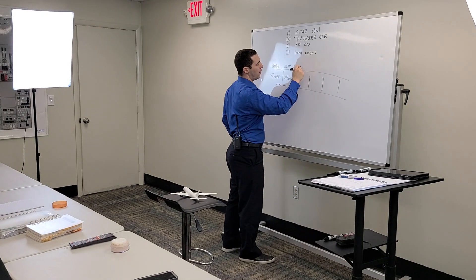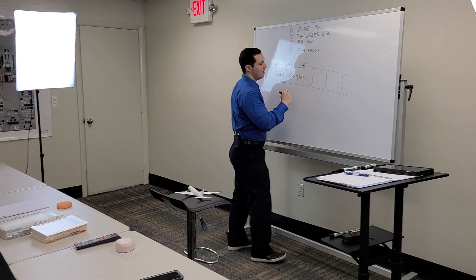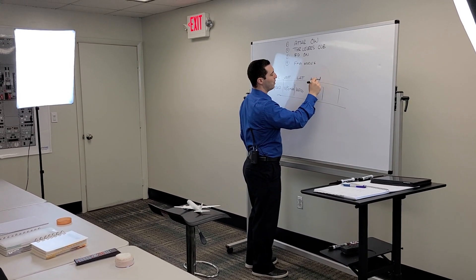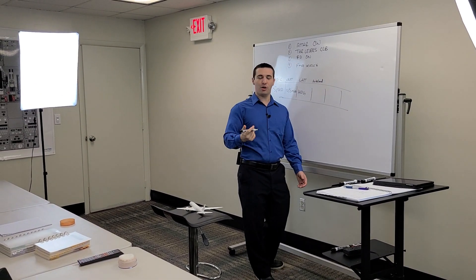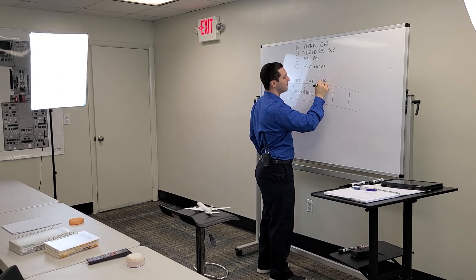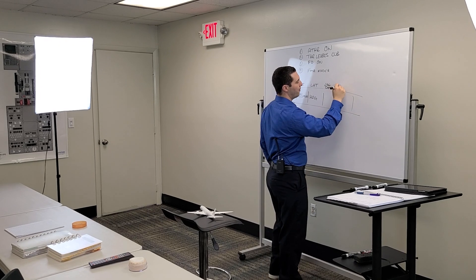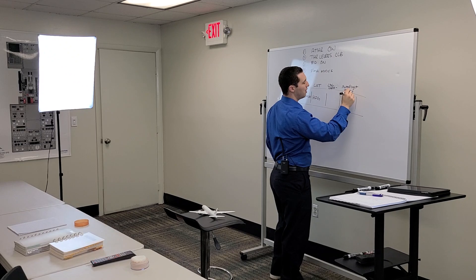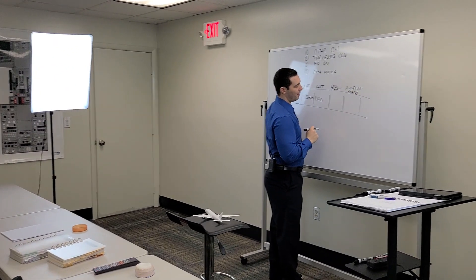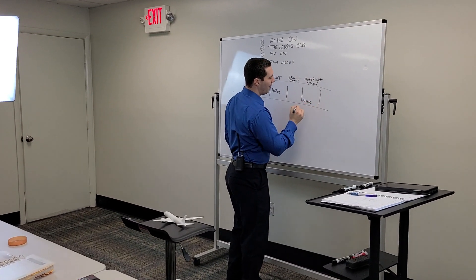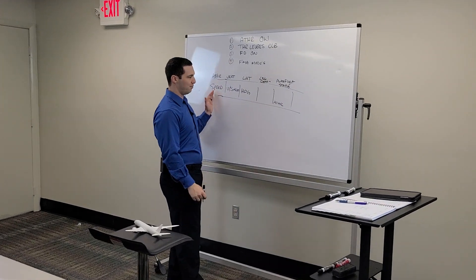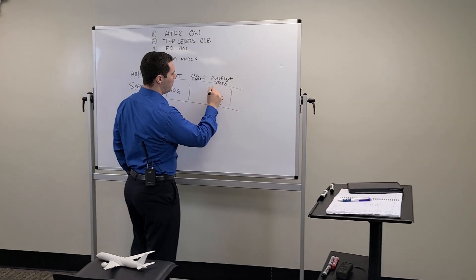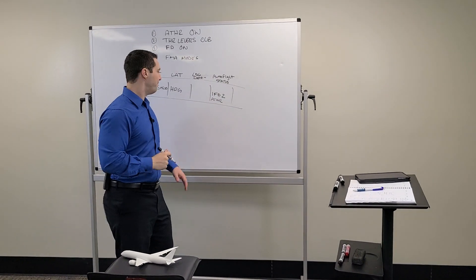Column three is the lateral column, which defaults into heading. Column four shows our landing capabilities — not necessarily auto land, but landing capabilities. Column five is auto flight status. Auto flight status will show auto thrust in white because we're in speed mode, and we'll have FD2 shown, with the autopilot coming on shortly.